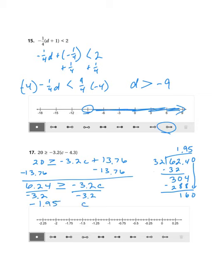And because we divided by a negative, we need to flip this symbol. So we have negative 1.95 is less than or equal to c. So that's going to be right here, just to the right of negative 2. And if negative 1.95 is less than or equal to c, that means c is greater than or equal to this number. So I'm going to shade to the right using this symbol right here.